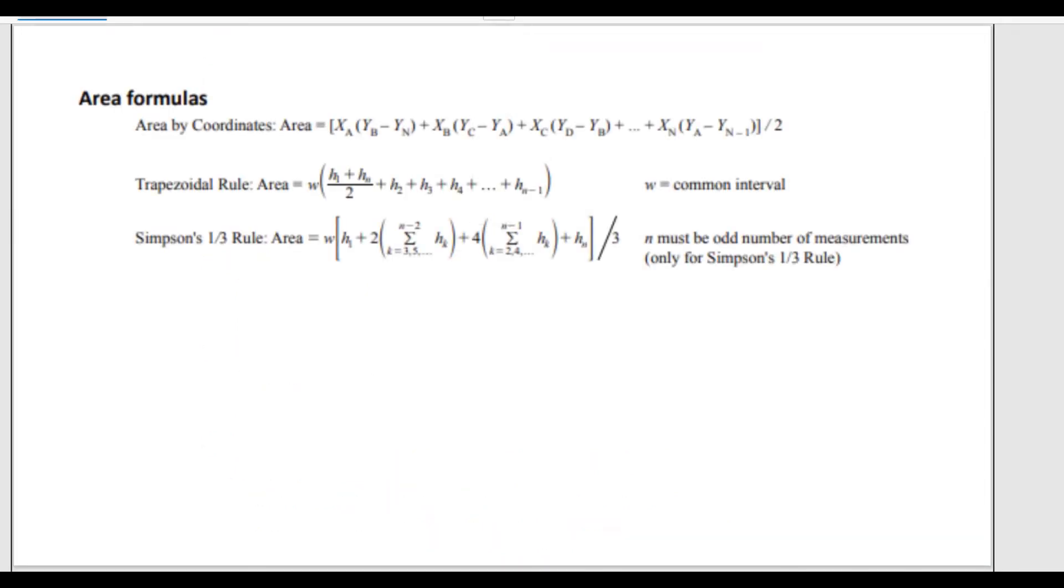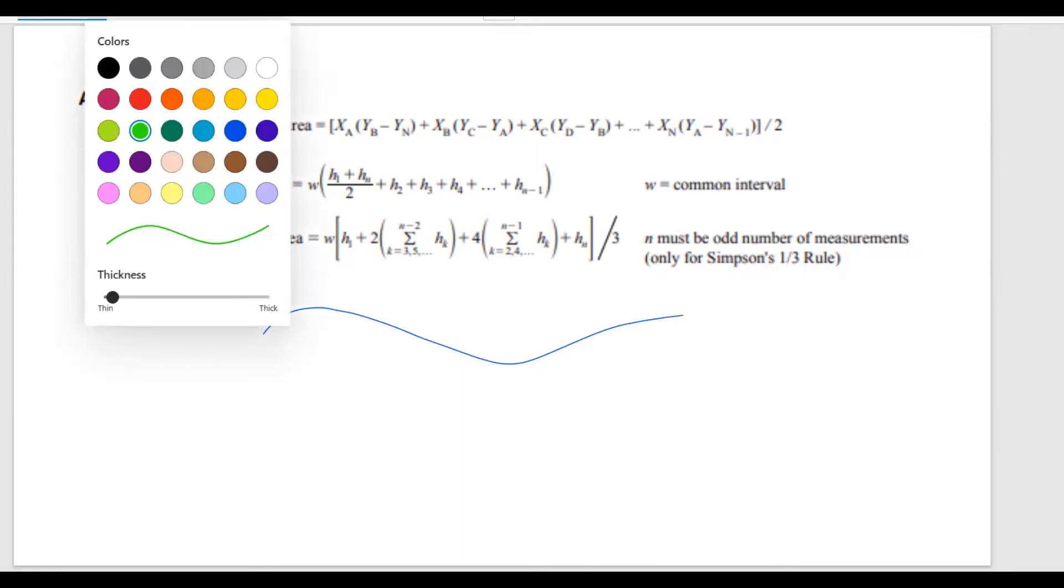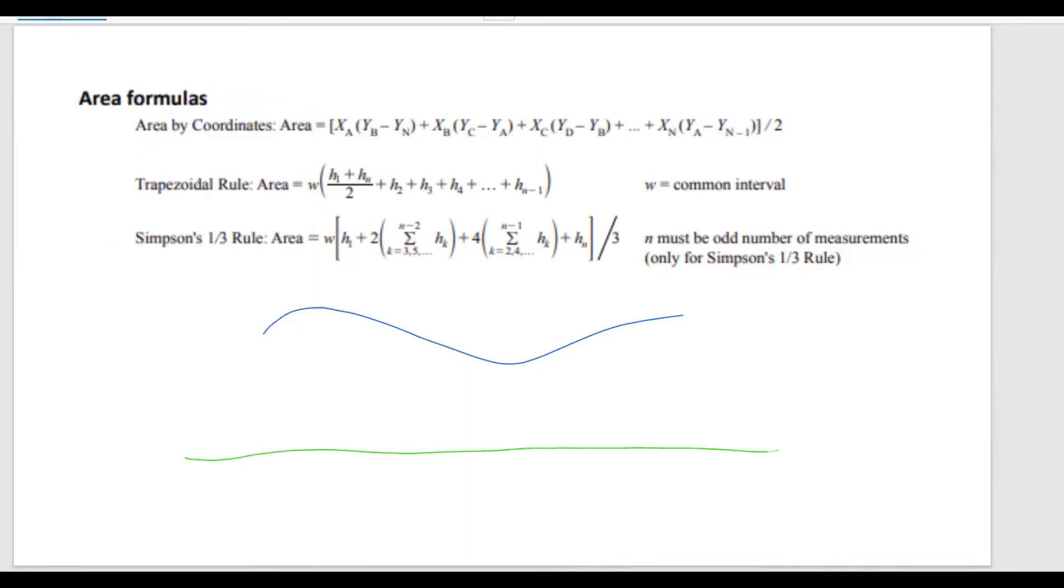Let's go ahead and have a visual of why and how we're using these two formulas. Imagine you have a curve like that and you have to calculate the area underneath this curve, which is this area right here. The way this is done, we're going to split this horizontal distance into equally spaced distances. I'm going to do this right here, and this is the w which is used in both of these formulas, called common interval.